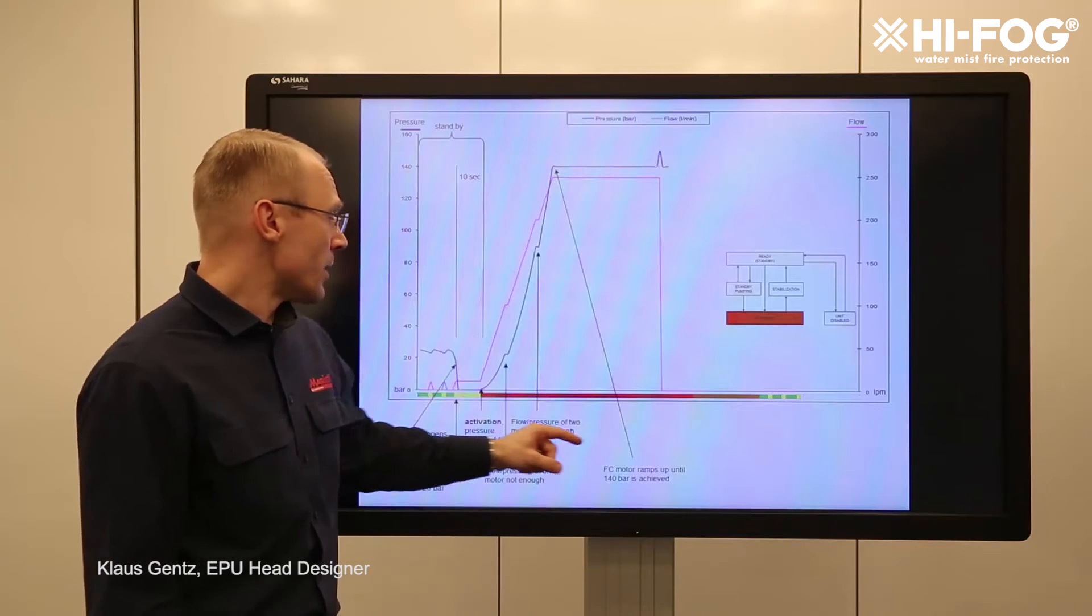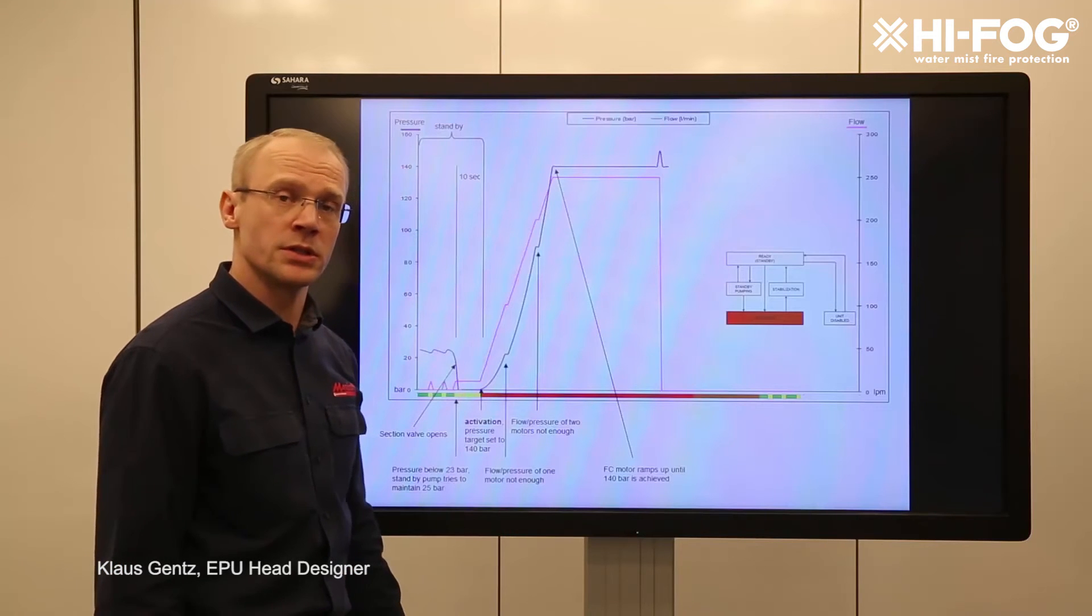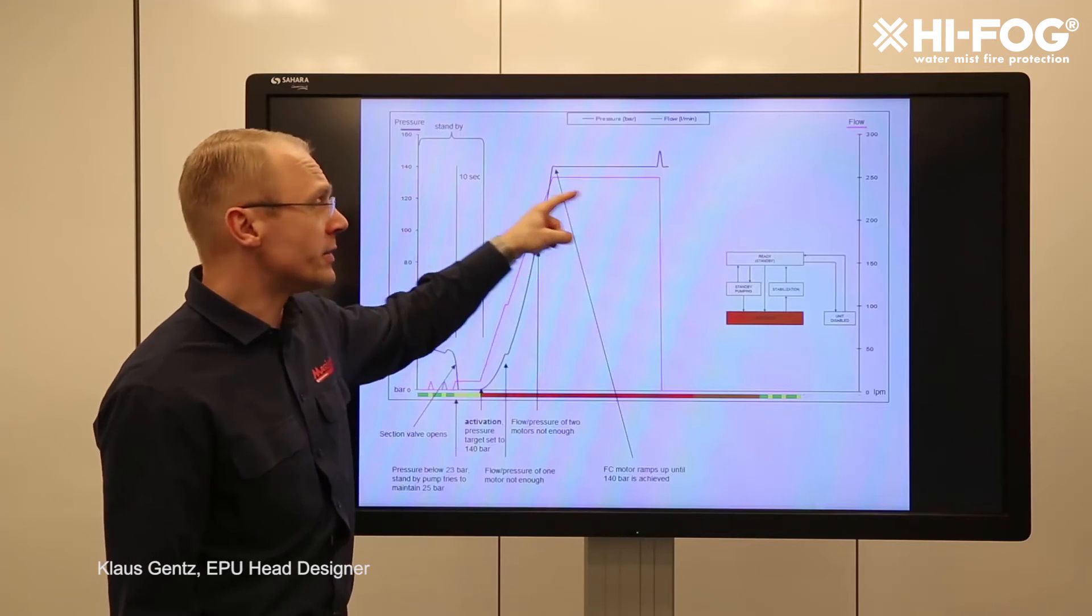The frequency converter will ramp up until we receive the target pressure which is 140 bar in this example and that gives about 250 liters of flow.